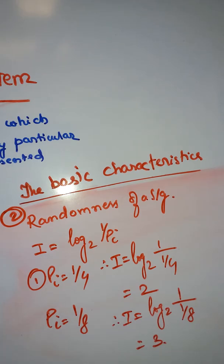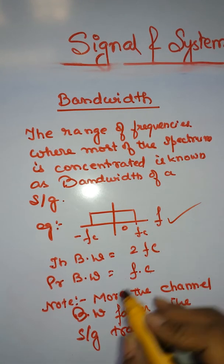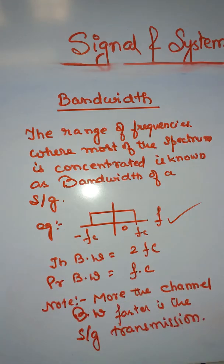An important characteristic is the bandwidth. Bandwidth is defined as the range of frequencies where most of the spectrum is concentrated. For example, your theoretical bandwidth will be between this to fc, and your practical bandwidth will be fc. Note, more the channel bandwidth, faster is the signal transmission. In our later videos, we will learn about bandwidth clearly.